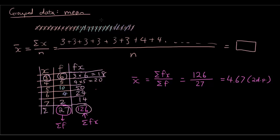You might ask, why can't we just do it the old way and add them up individually? Well, that will probably work if you have a small data set like this one. But if you had a really large data set — for example, a hundred fives or two hundred sixes — then doing it using the table would be a lot quicker. Thanks for watching the tutorial on how to find the mean for grouped data. See you next time.